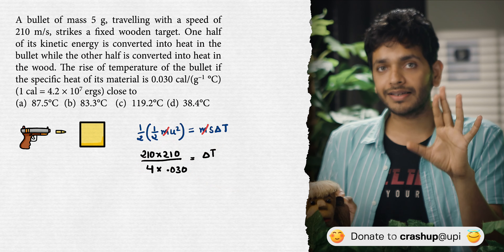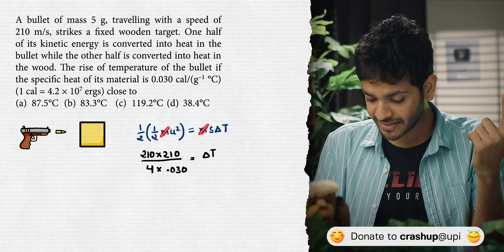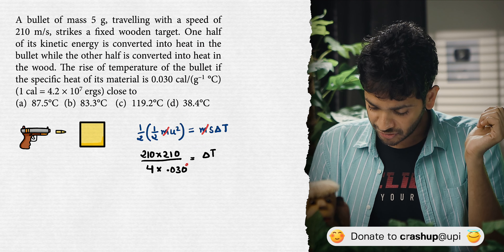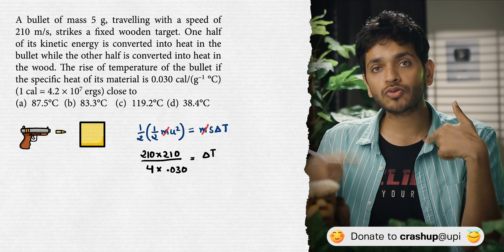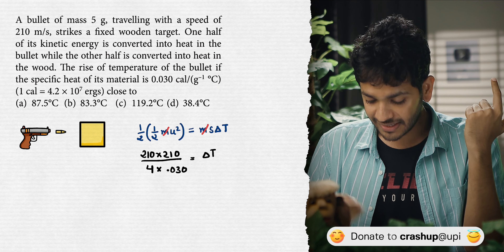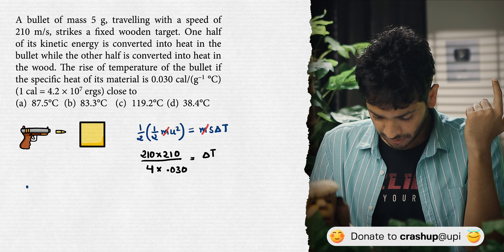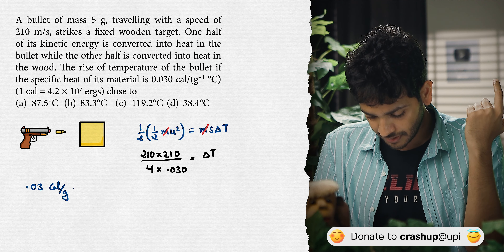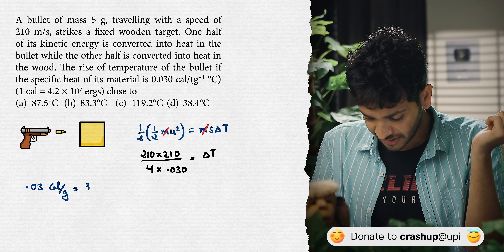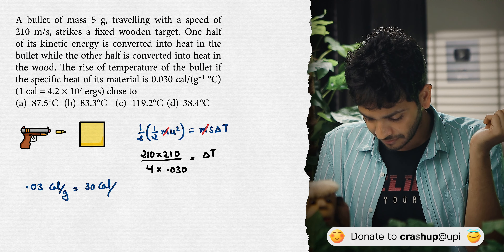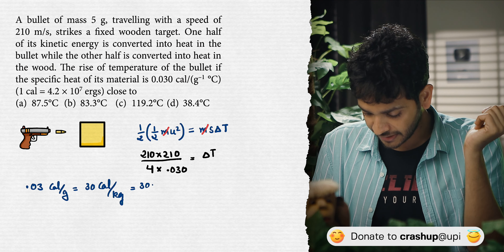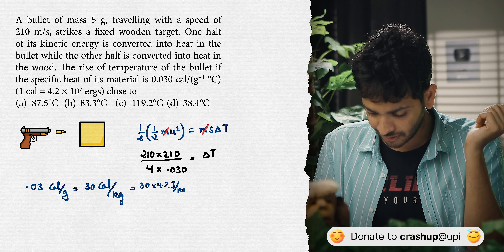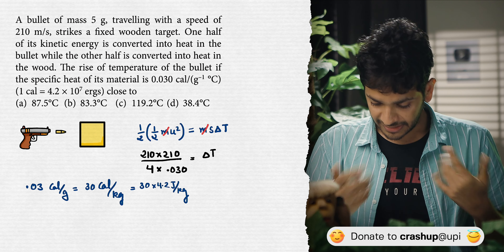This is where the common mistake happens. When mass cancels, we forget that all values must be in SI units. The specific heat capacity given is 0.03 calorie per gram. Converting to SI: 0.03 cal/g × 1000 = 30 cal/kg, and converting to Joules: 30 × 4.2 = 126 Joule per kilogram. Now it is in SI units.